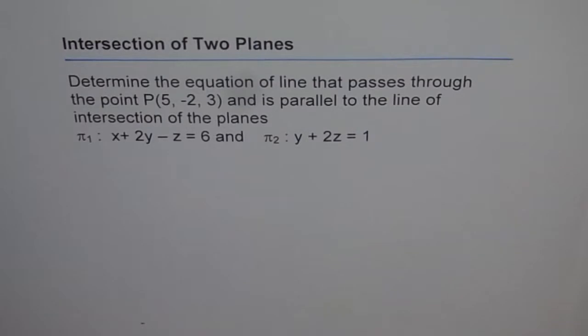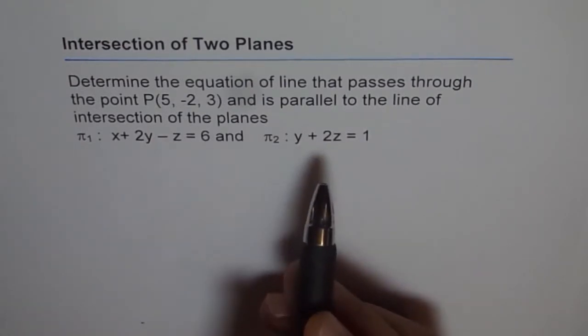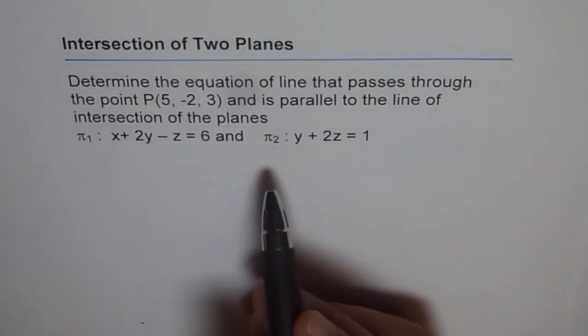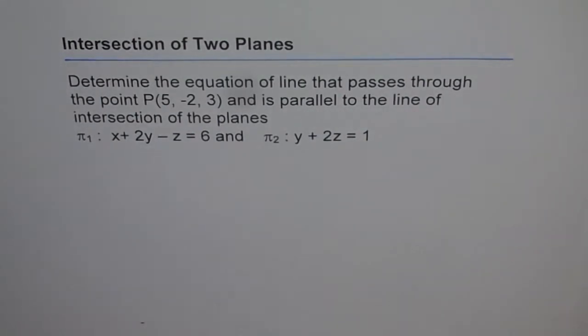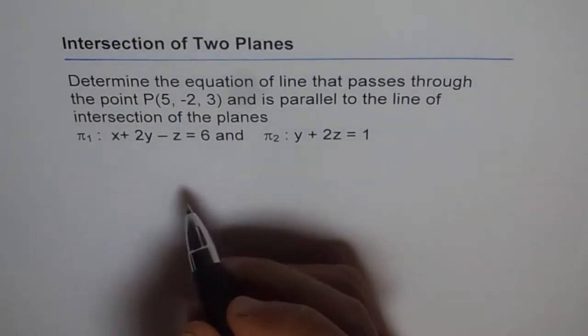So the line which lies in both the planes, the direction vector of that line must be perpendicular to the normal. So what we can do is we know the direction vectors here and if we do the cross product of that, then we get the direction vector of the line. Let's do that.